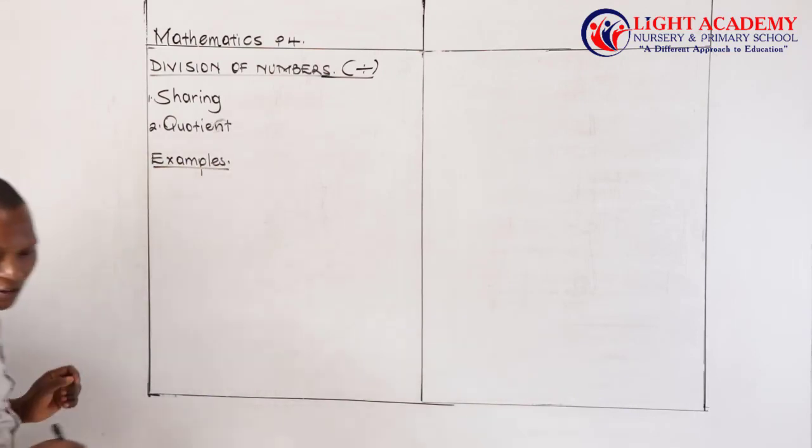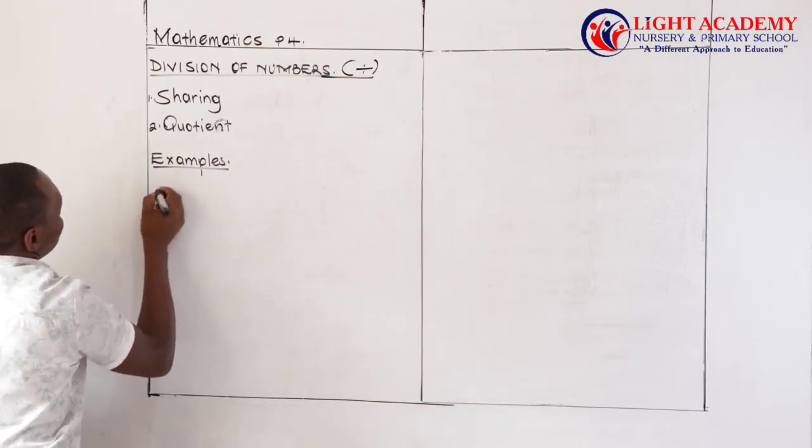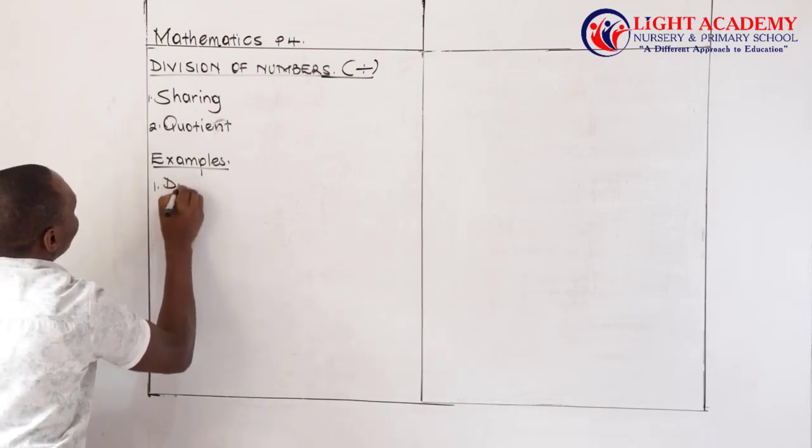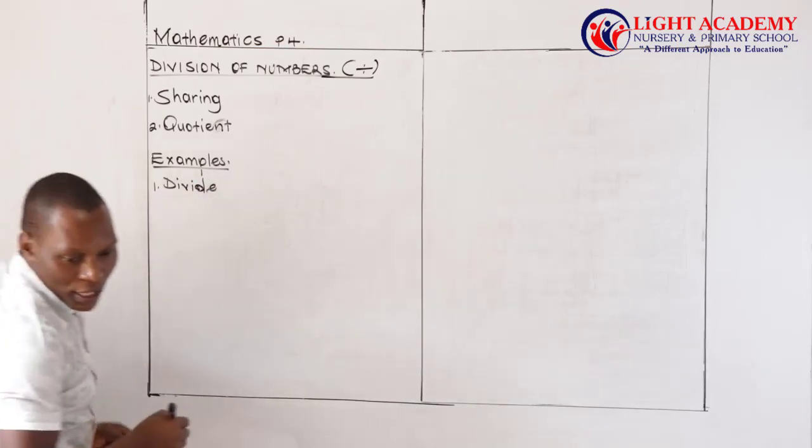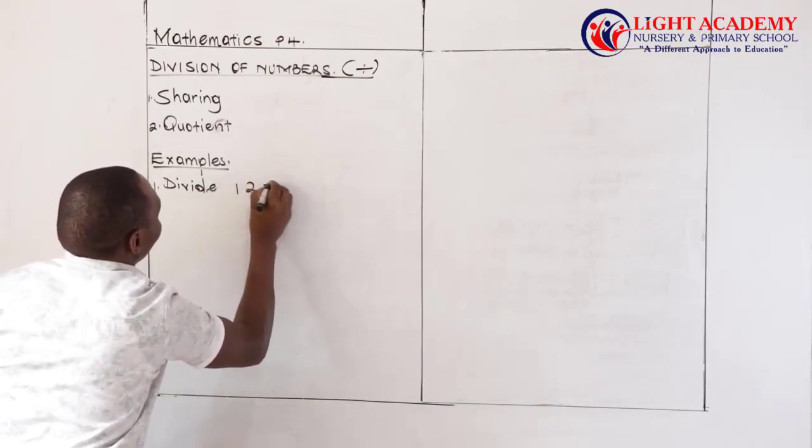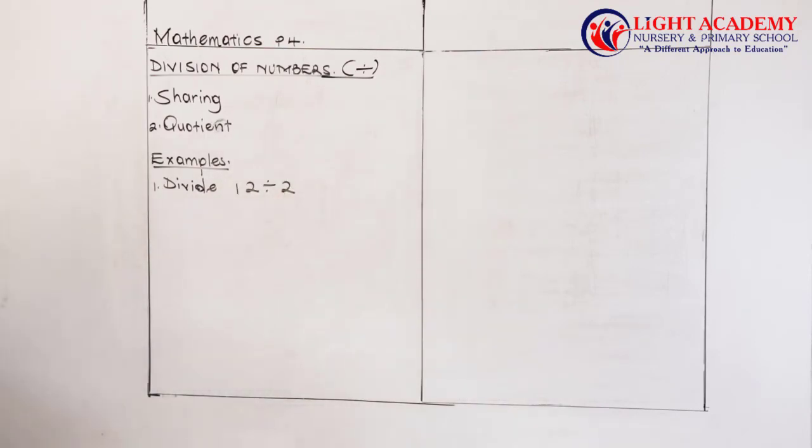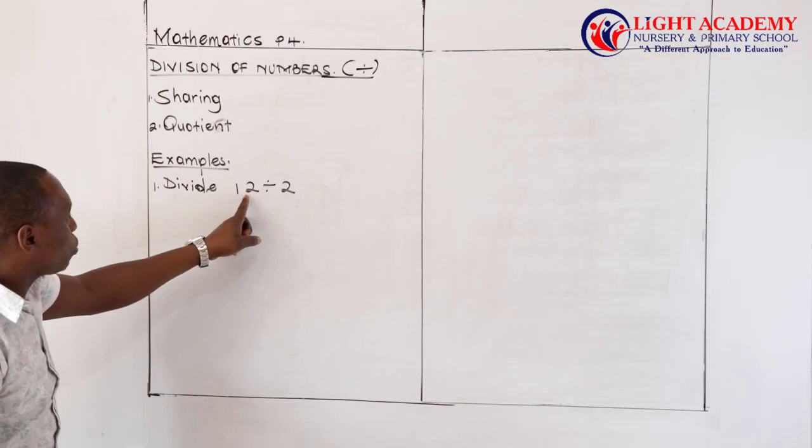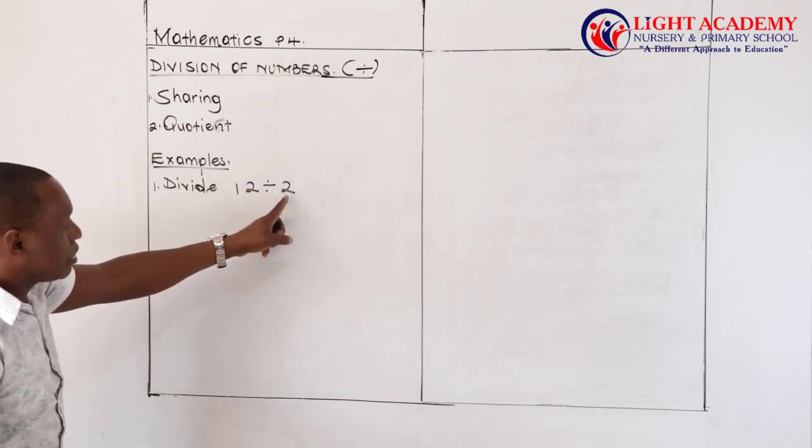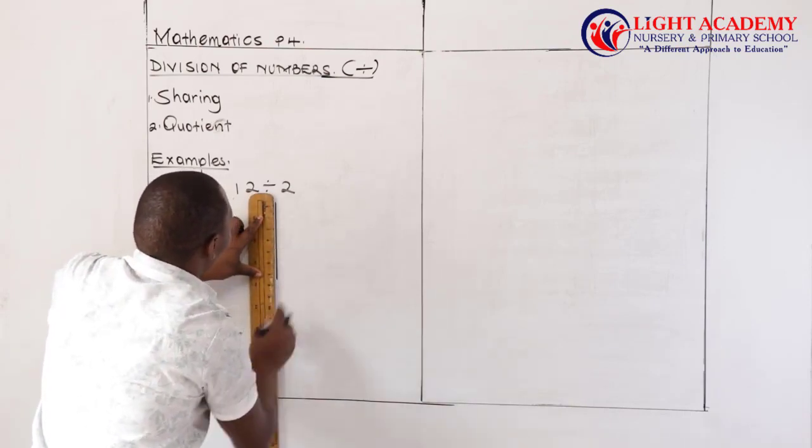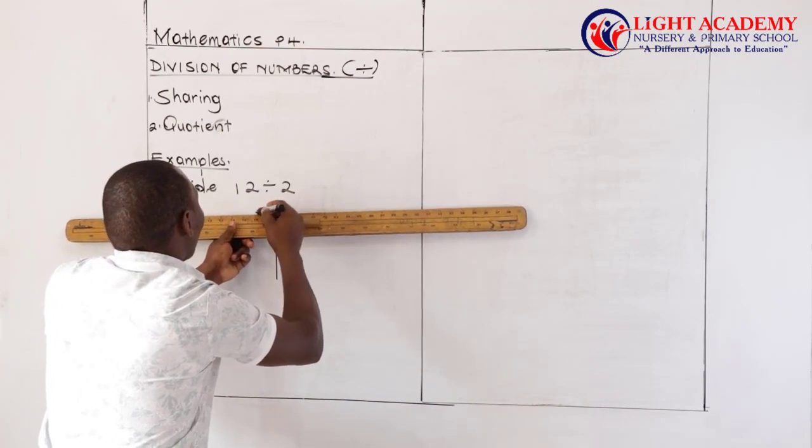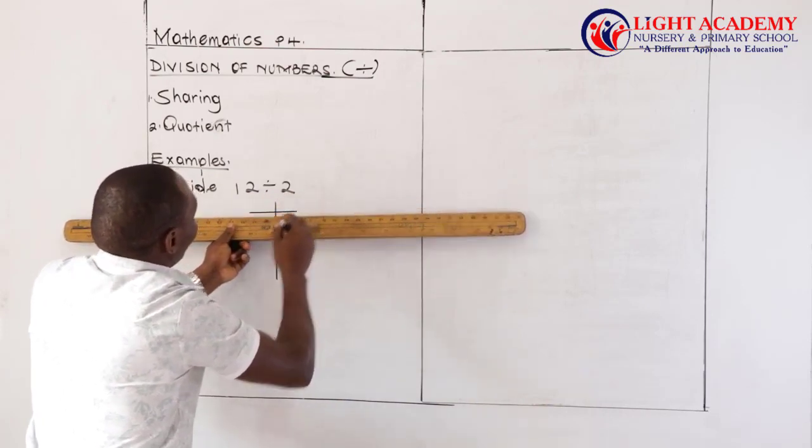We can have the first one. In your primary 3, you could have certain questions like when they say divide 12 divided by 2. So in your working, in your method, just like in math we need a lot of working. These ones, assuming they are 12 books, I'm giving them to two children. At a primary 3 level, this is what we would do, one of the ways.